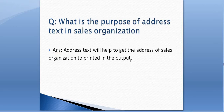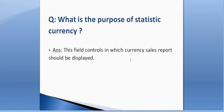What is the purpose of address text in sales organization? It is also a field in sales organization — the address text helps to get the address of the sales organization printed on the output. What is the purpose of statistic currency in sales organization? This field controls in which currency the sales report should be displayed. If you mention USD, your sales report will display in USD; if you mention INR, the sales report will display in INR.